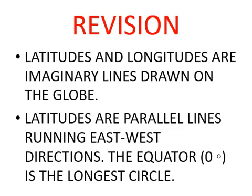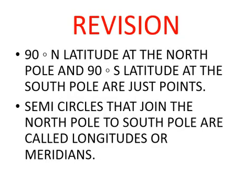The latitudes are parallel lines running in the east to west direction. The equator is the longest circle. 90 degree north latitude at the North Pole and 90 degree south latitude at the South Pole are just a point — latitude 90 degree north and 90 degree south are just a point.